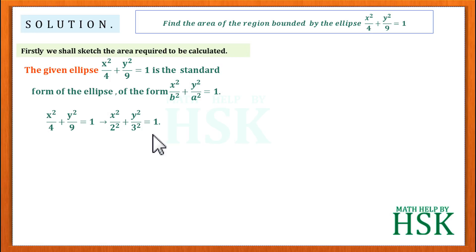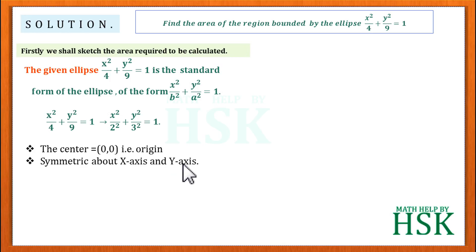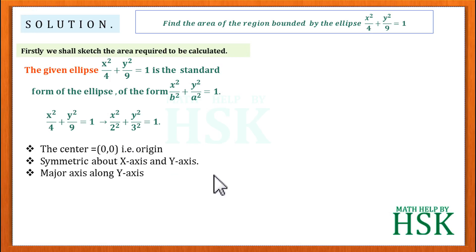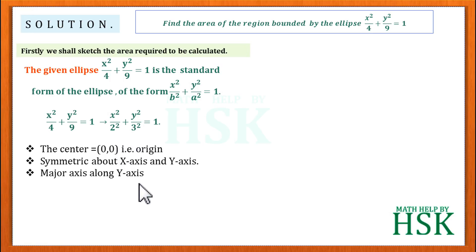Since this is in standard form, a few things can be concluded. First, the center of this ellipse is the origin. Next, it is symmetric about the x-axis and y-axis because the curve contains only x² and y² terms. The major axis is along the y-axis, since the denominator of y² (which is 3²) is greater than the denominator of x² (which is 2²).